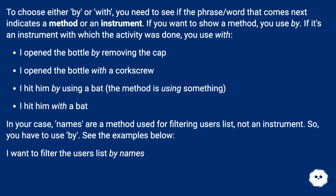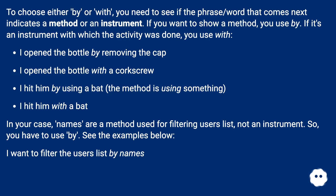To choose either 'by' or 'with', you need to see if the phrase or word that comes next indicates a method or an instrument. If you want to show a method, you use 'by'. If it's an instrument with which the activity was done, you use 'with'.